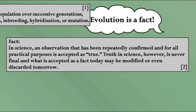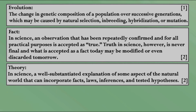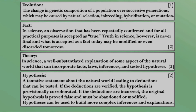Now let's take a look at the word hypothesis. A hypothesis is a tentative statement about the natural world leading to deductions that can be tested. If the deductions are verified, the hypothesis is provisionally corroborated. If the deductions are incorrect, the original hypothesis is proved false and must be abandoned or modified. Hypotheses can be used to build more complex inferences and explanations. Basically, a hypothesis is a statement subject to experimentation to find supporting evidence or to be falsified, while a theory is the result of well-tested and supported hypotheses.